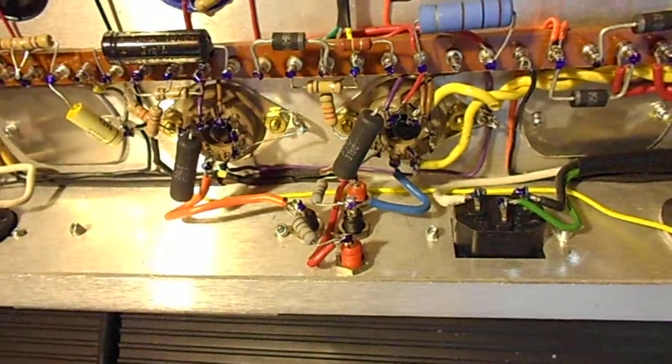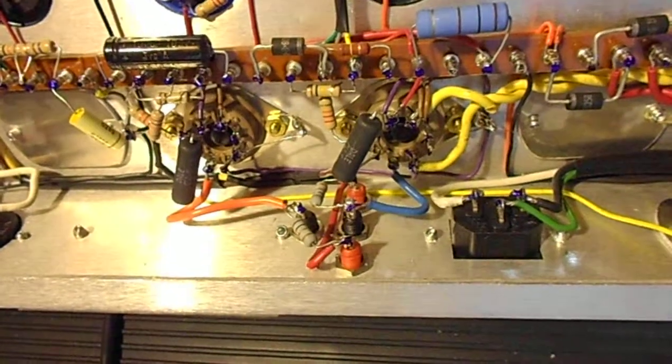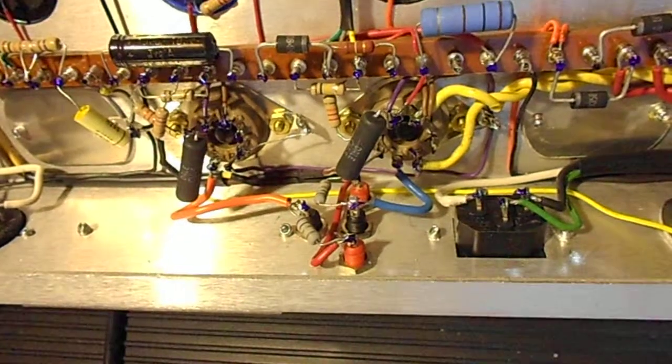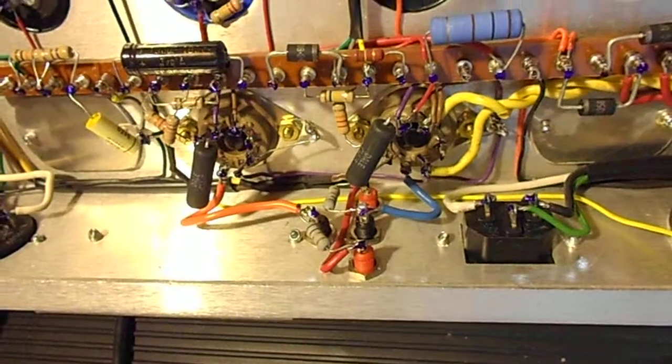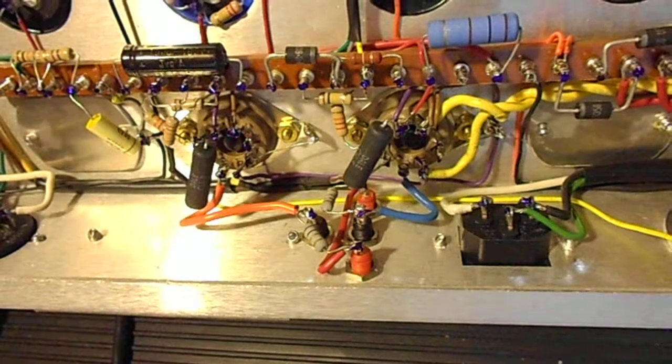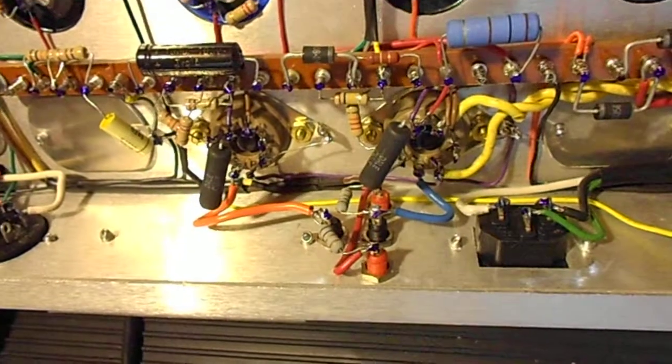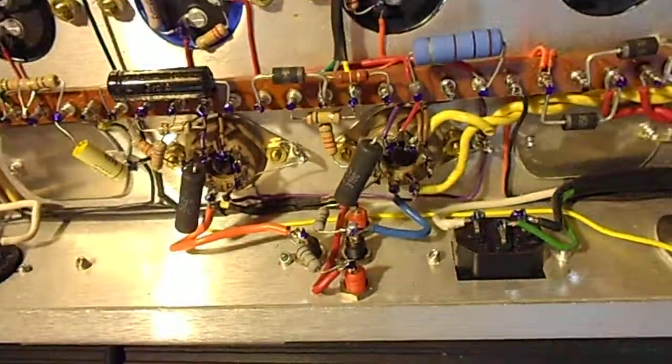So if you want to have a 1 ohm resistor in series with the anode going to the output transformer so that you can measure current,